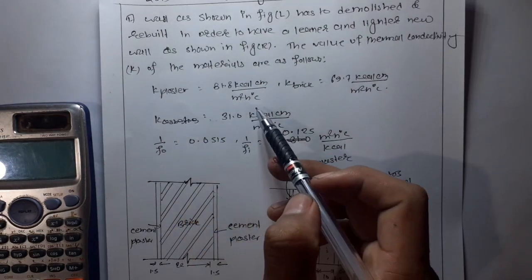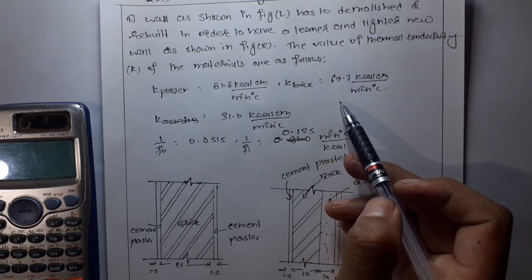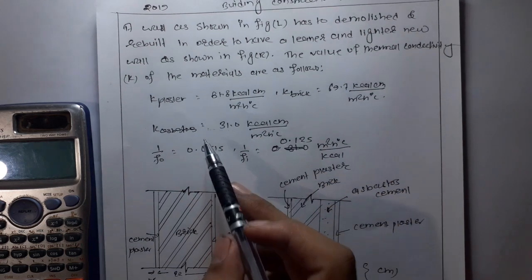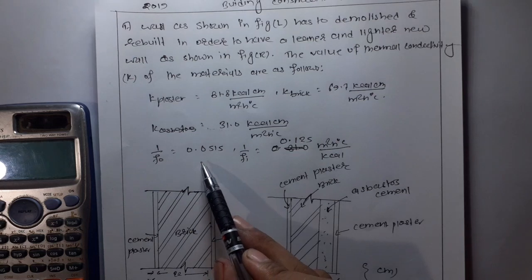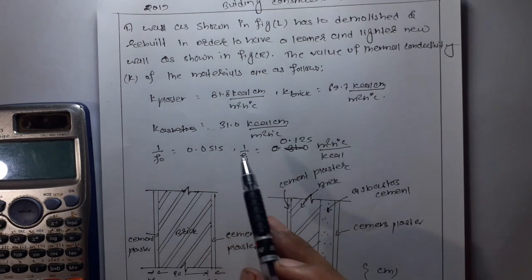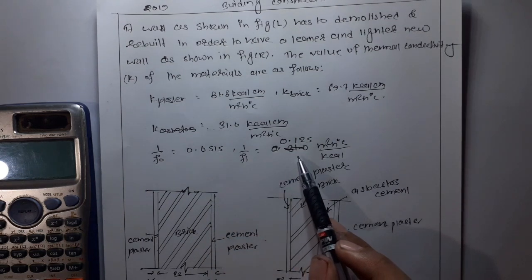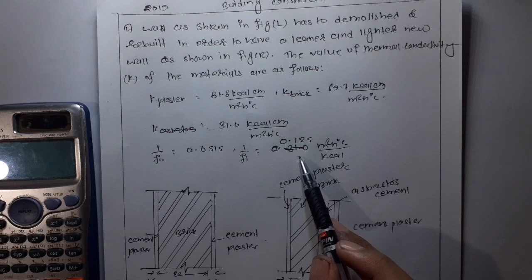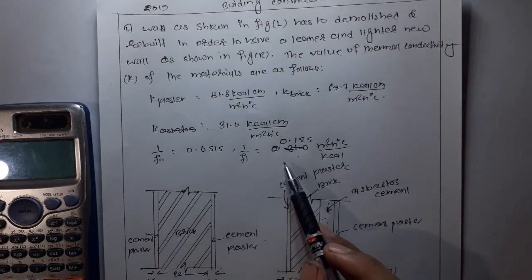K plaster is 81.8, k brick is 69.7, k asbestos is 31. One by f net is 0.0515 and another value is 0.125.